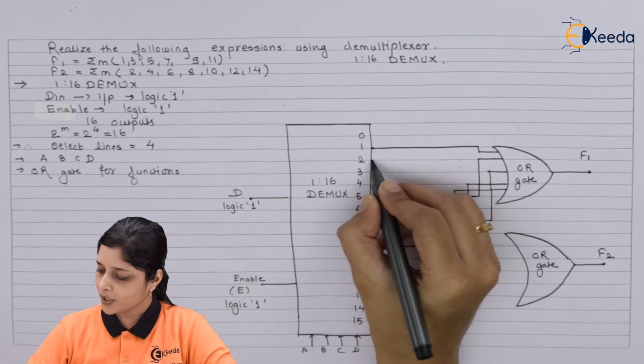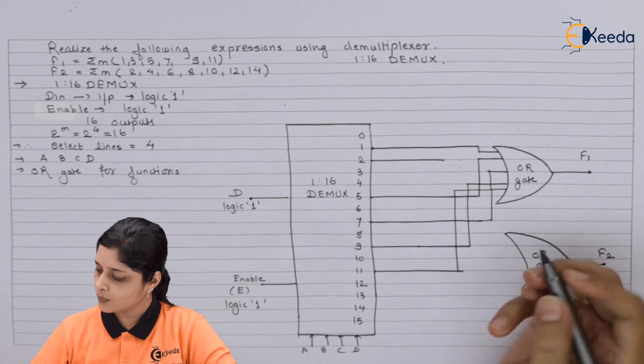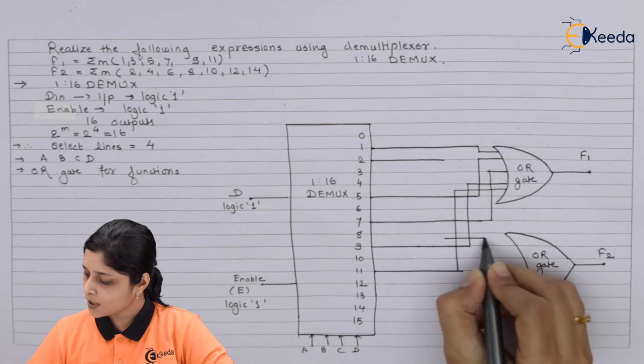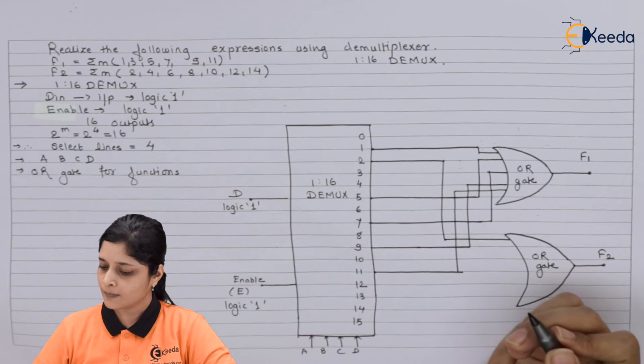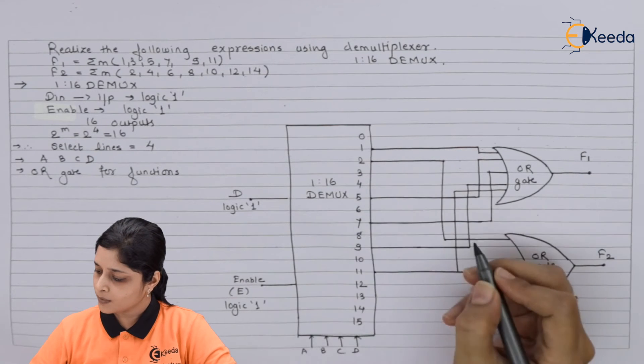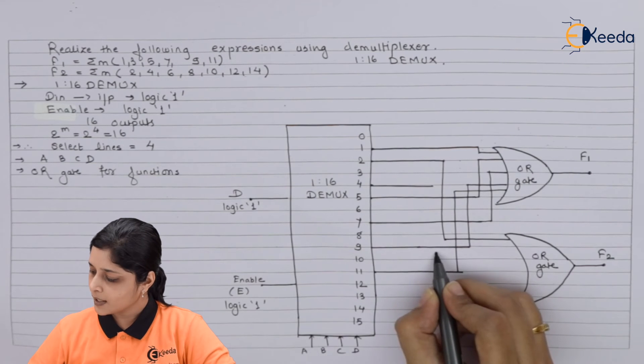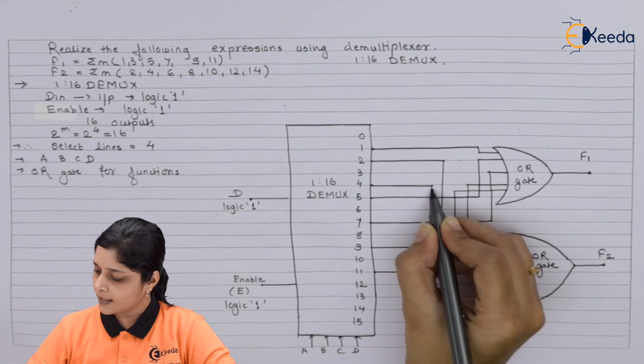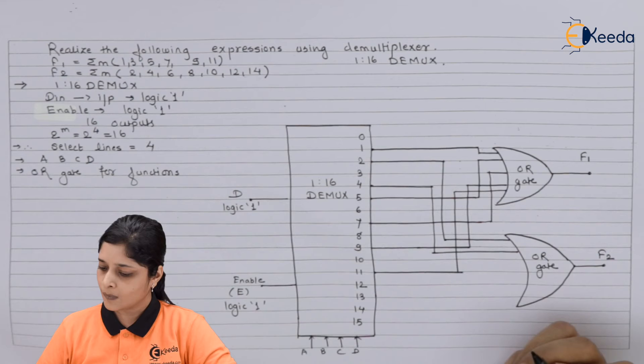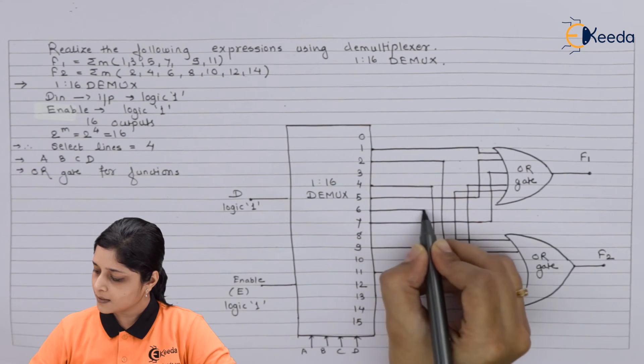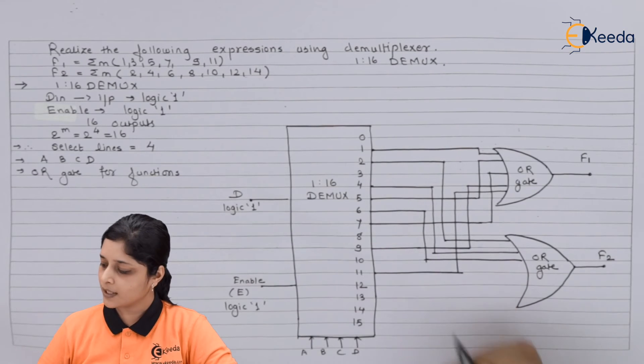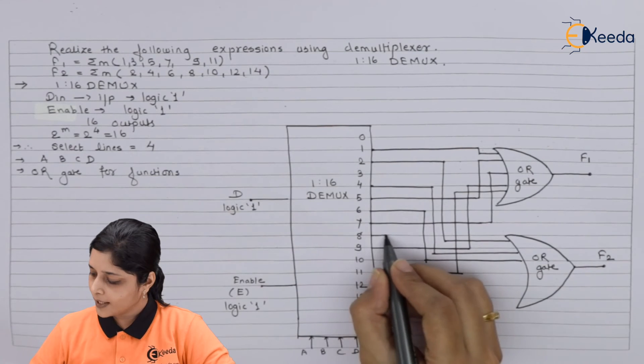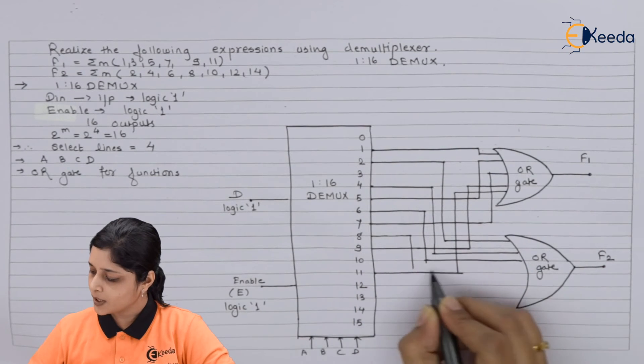So one by one we are going to take 2. So for connection of 2 we will draw like this. Then 4 - take 4 outside and connect here. Then 6 - take 6 outside and you have to connect like this. Then we have 8 present over here.